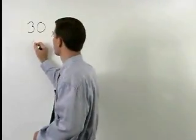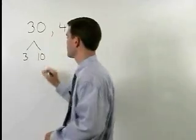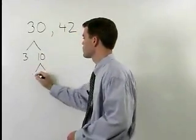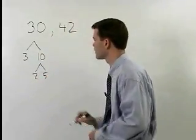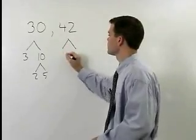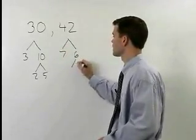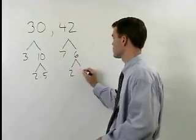Thirty is just 3 times 10, and 10 is 2 times 5. Forty-two is 7 times 6, and 6 is 2 times 3.